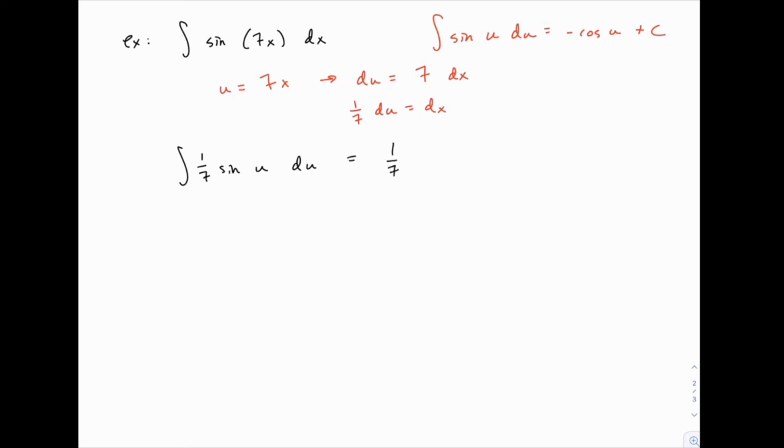The 1/7 gets carried along. The sine function turns into the negative cosine function, so we'll put the negative sign out front, and then we have plus c.